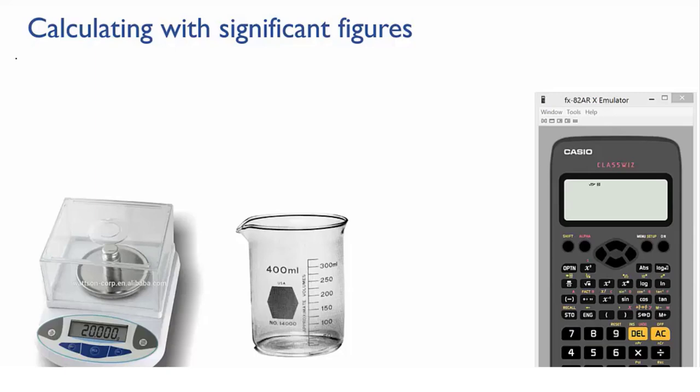How does that affect the accuracy of your answer? How many sig figs should your answer be? Well, let's say this is your mass and this is your volume, and let's put that in the calculator to calculate the density.